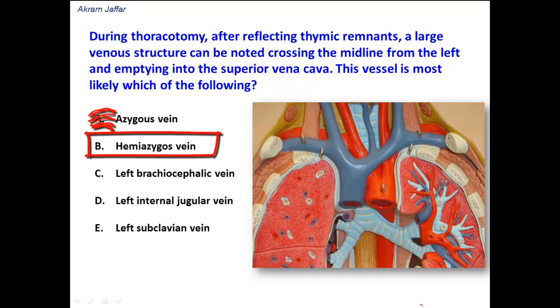The hemiazygous vein does cross from left to right, but it crosses behind the esophagus. It is very deep and located in the inferior mediastinum.